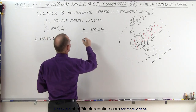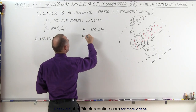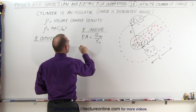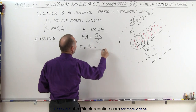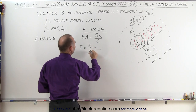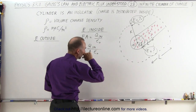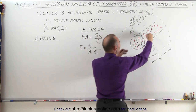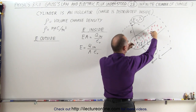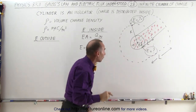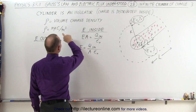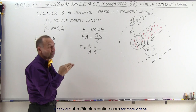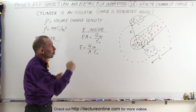We use the equation E times A equals Q_inside divided by epsilon sub-naught, or E equals Q_inside divided by A times epsilon sub-naught. We want to know the charge inside the small Gaussian surface where the length is L and the radius is r. We multiply the volume charge density times the volume of that Gaussian surface, since the entire Gaussian surface in this case holds the charge inside.